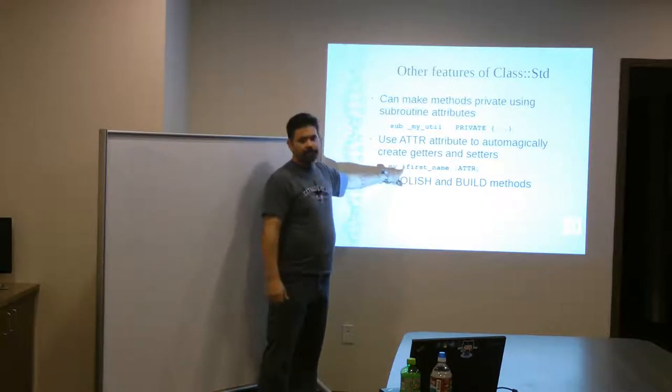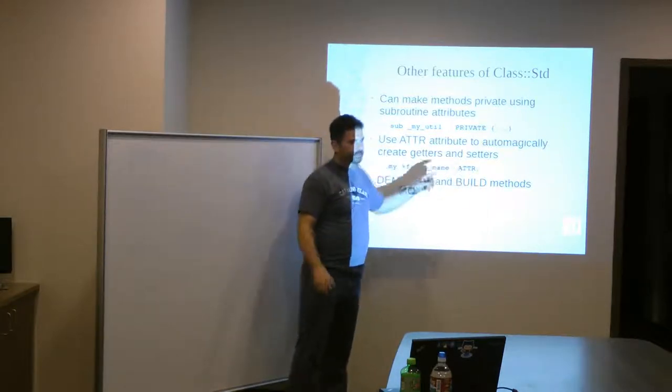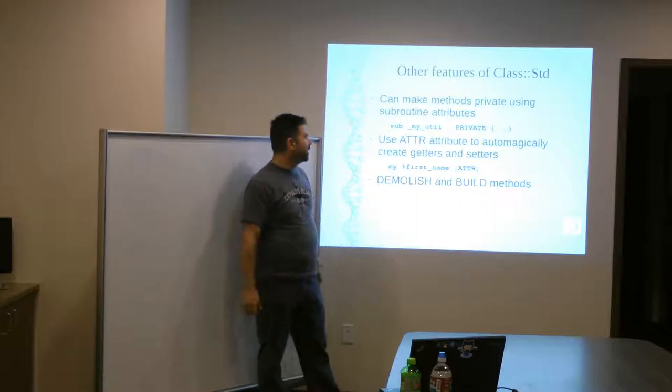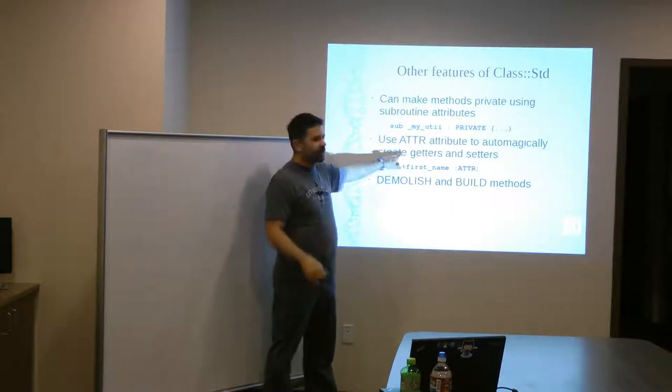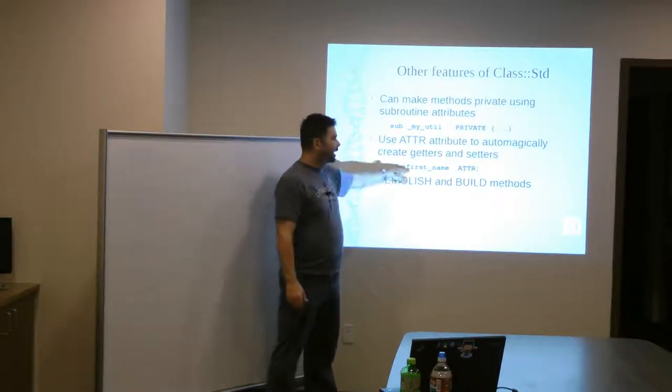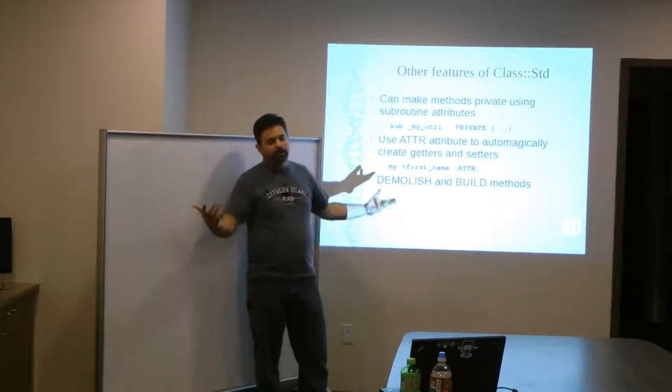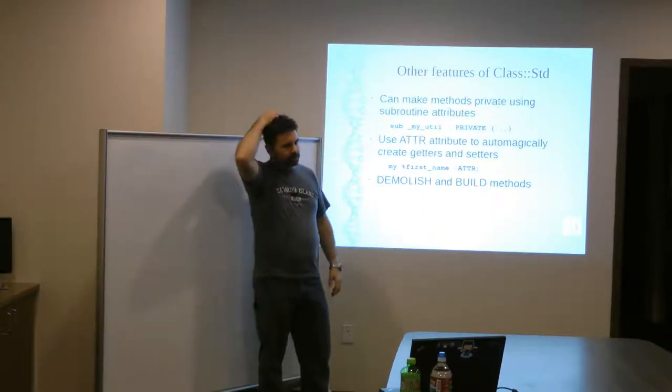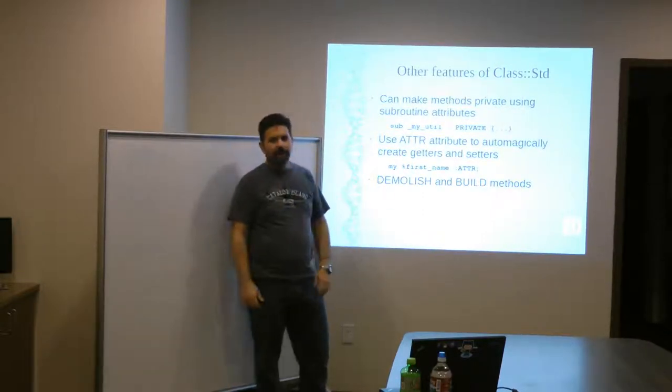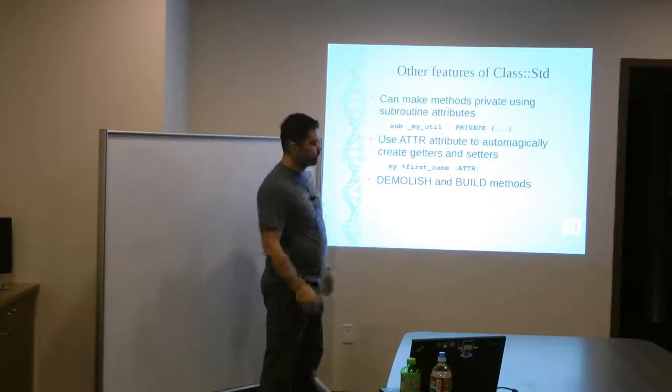that subroutine can only be called from within the package itself. And another thing you can do here is when you're declaring those lexical variables inside your package, you can say colon ATTR. They're class attributes. And this does two things. One, it sets them up as a class attribute, but it also automatically creates getters and setters for them. So, now you have a get first name and a set first name. It automatically does those for you because most of the time, you know, you just, for set, you pass in a value, it plugs it in, you're done, and that gets really redundant. So, this is kind of a DRY enhancement to the base inside out.